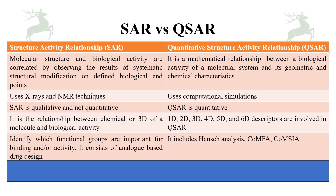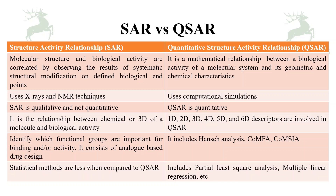SAR identifies which functional groups are important for binding or activity, and it consists of analog-based drug design. QSAR includes Hammett constants, Hansch analysis, CoMFA, and CoMSIA, among many techniques. Statistical methods are less prominent in SAR compared to QSAR. QSAR includes partial least squares (PLS), multiple linear regression (MLR), and many other statistical methods.